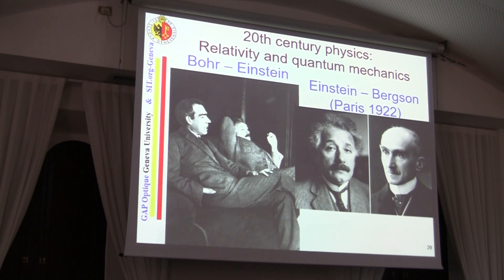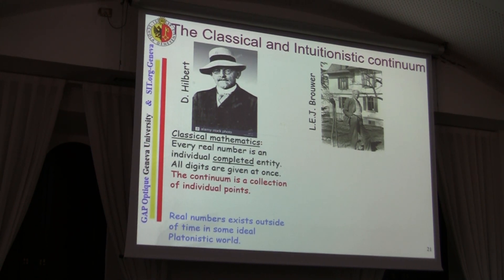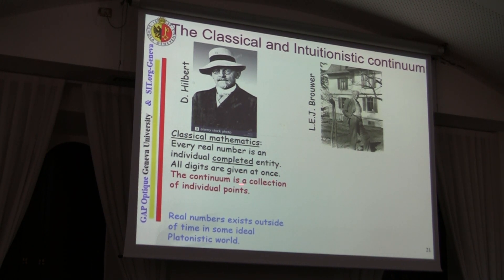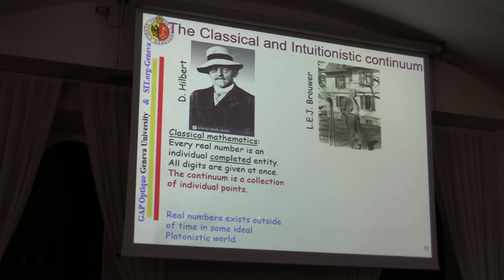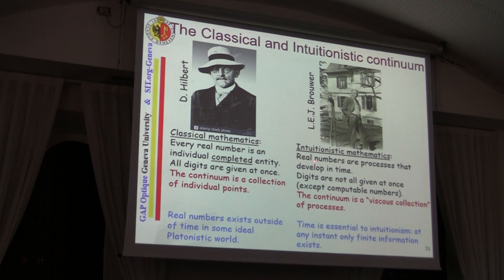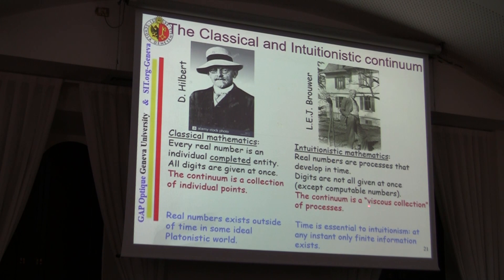We all know about the discussions between Einstein and Bohr, and Einstein and Bergson. But there was another discussion at the same time between two mathematicians: David Hilbert and Brouwer. Hilbert, as a typical example of classical mathematics, held that every real number is an individual completed entity — all digits are given at once. The continuum is a collection of individual points like shells on a beach, and real numbers exist outside of time in some ideal Platonic world. On the other side, Brouwer considered real numbers as processes that develop in time. Digits are not all given at once, and the continuum is a viscous collection of processes. Time is essential to intuitionism — at any instance, only finite information exists.